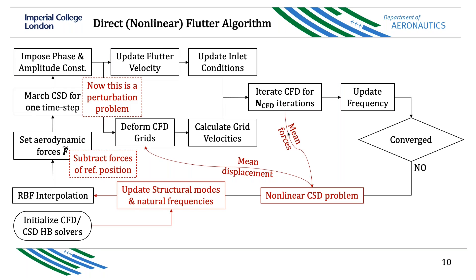More interesting is what we call non-linear flutter — when the equilibrium of the wing is around a non-linear equilibrium. We need to introduce extra points where we calculate the forces and the displacement of the equilibrium. We also need to update the structural modes and the natural frequencies, and from this updating, we repeat the loop. The methodology is basically the same, but this updating must occur within the loop.